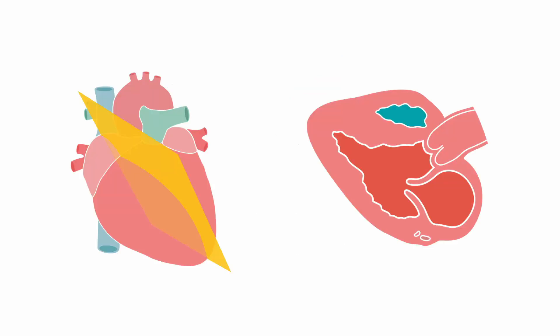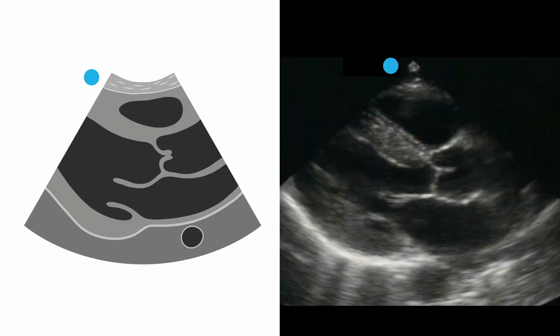This is the image orientation you want to get. You should have your right ventricle on the top of the image, your left ventricle adjacent to it, the left atria, the mitral valve in between, and the aortic valve. Here's what it looks like on ultrasound: right ventricle on the top of your screen, left ventricle, mitral valve, left atrium, and your aortic valve.